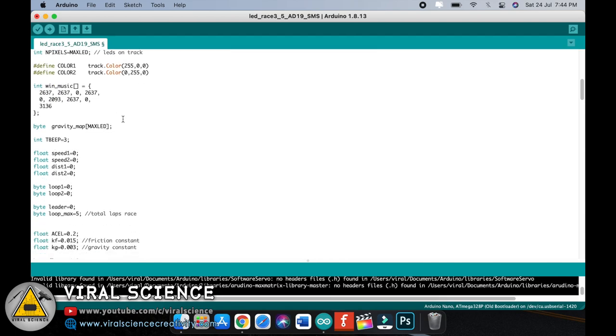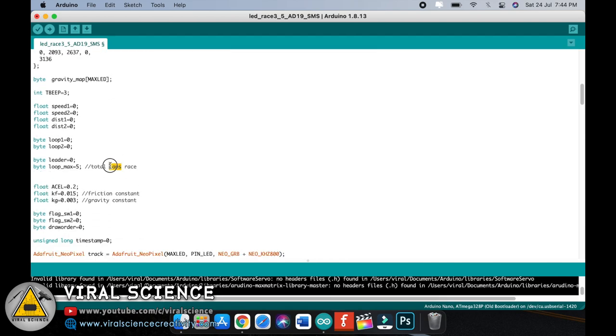Below in the code, over here you can set the number of laps you want in the game. By default it is 5, you can change it to any number and set it.